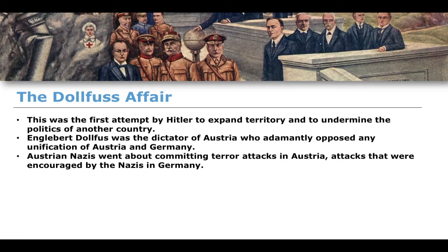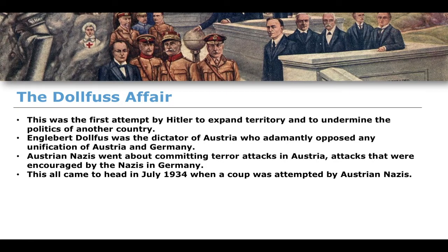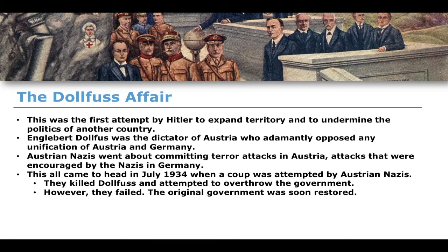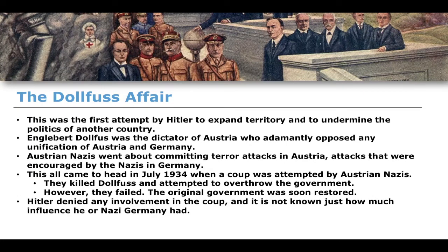The goal was to make Austria malleable enough for Hitler to influence from abroad and ultimately to expand into Austrian territory. All of these problems came to a head in July 1934 when a coup was attempted by Austrian Nazis. They killed the dictator of Austria, Engelbert Dollfuss, and attempted to overthrow the government. However, the attempt failed and the original government was restored. Hitler denied any involvement in the coup, and it is not fully known how much influence he or Nazi Germany had over the affair.